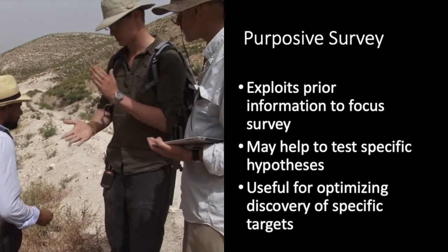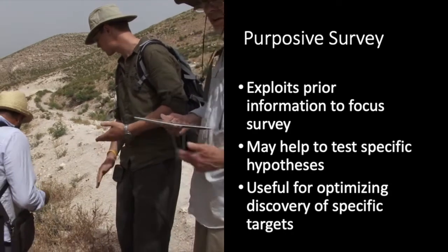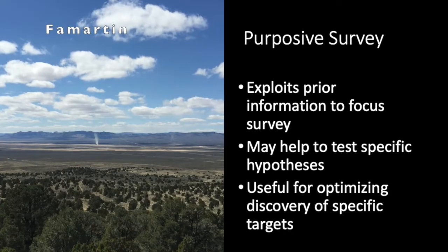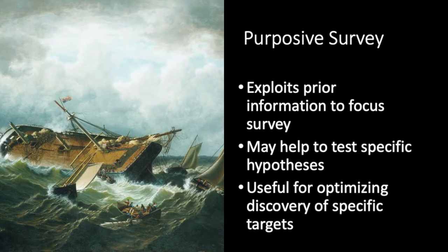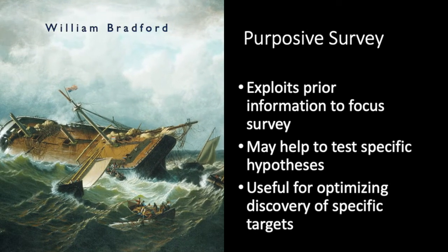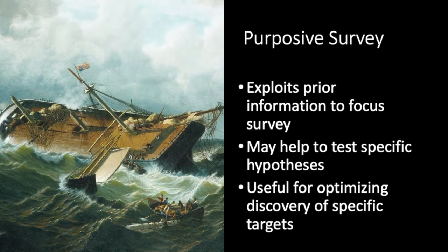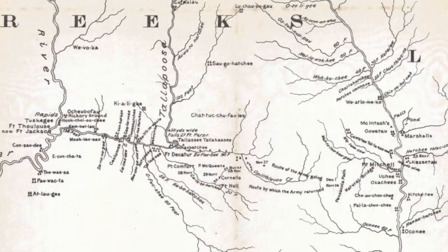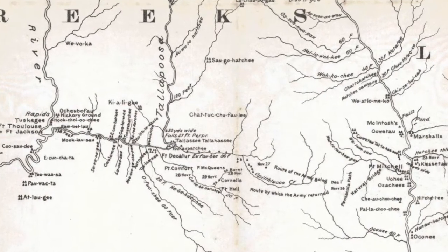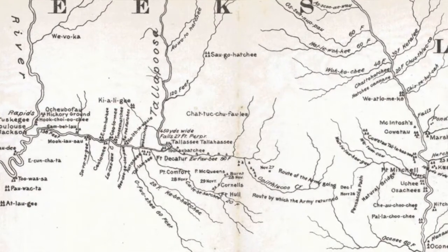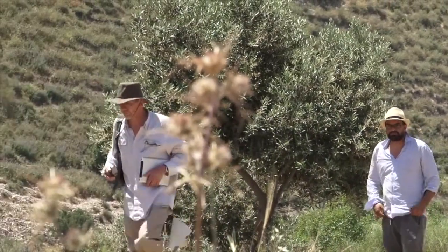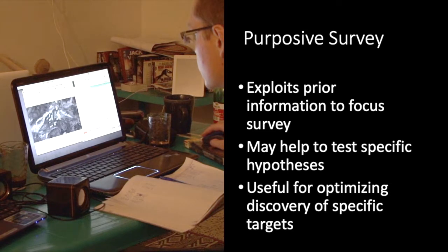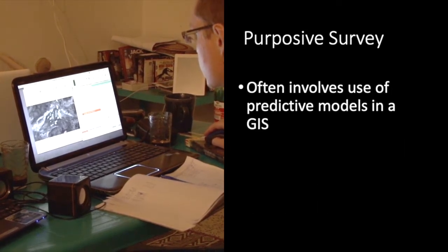Purpose of survey or prospection involves searching for particular targets or particular kinds of targets. A classic example is a search for a shipwreck site that takes advantage of historical information on the most likely place where the ship went down. But it can also involve searching for historic sites whose locations are only approximately known, such as historic forts, or searching for particular kinds of sites whose locations are not known, but that are very difficult to detect. Today, purpose of survey often involves predictive modeling in a GIS.